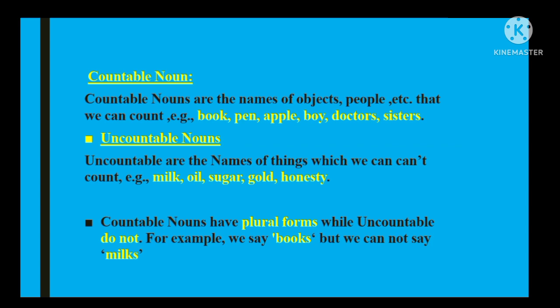Countable aur uncountable ek doosre ke opposite hain. Countable nouns woh hain jinhe hum gin sakte hain, jaise book, pen, apple, boy, doctor, sister, etc. Uncountable nouns woh hain jinhe hum nahi gin sakte, jaise doodh, oil, sugar, gold, honesty. Countable nouns ki plural forms bana sakte ho, jaise 'books' — lekin uncountable ki plural form nahi hoti, jaise hum 'milk' ko 'milks' nahi keh sakte. Yeh important point hai yaad rakhne ke liye.